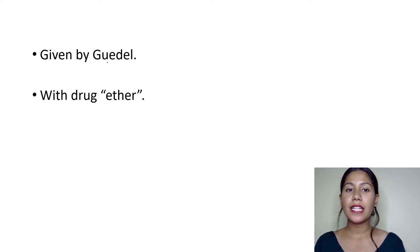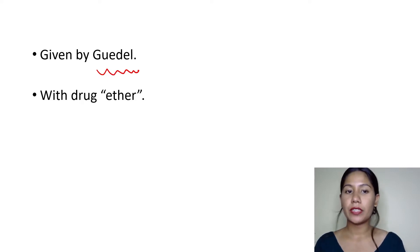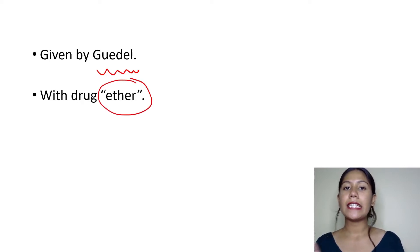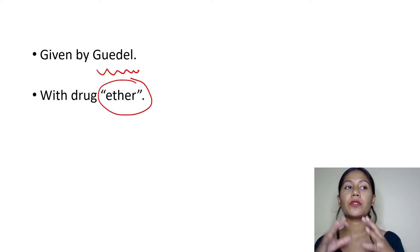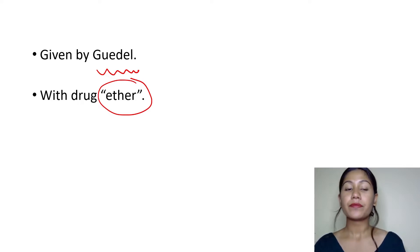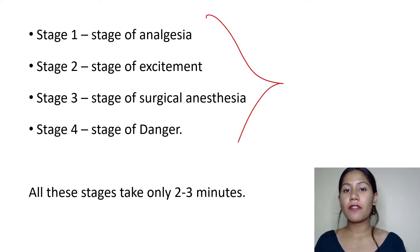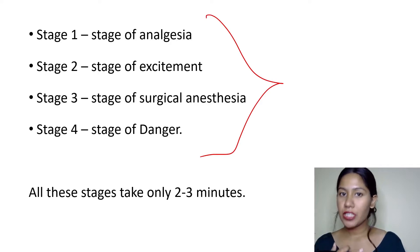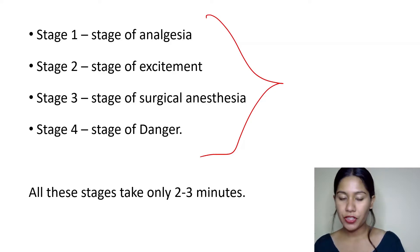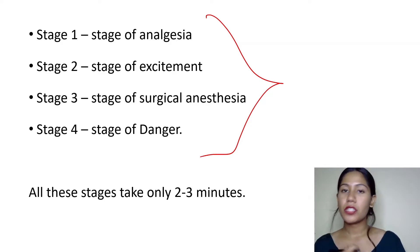The stages of anesthesia were given by Guedel — the scientist's name is very easy to remember: Guedel. He used the drug ether and observed all the parameters in a patient after administering it, then developed the stages of anesthesia. We mainly have four stages: stage of analgesia, stage of excitement, stage of surgical anesthesia, and stage of danger.